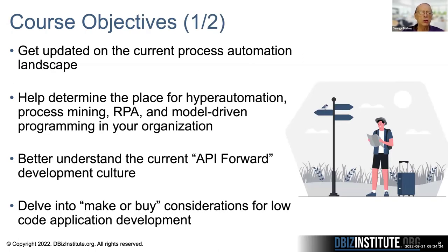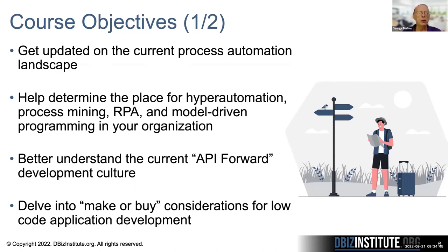This specific course has some specific objectives. First, we want to get you updated on the current process automation landscape. We want you to understand the place for hyper-automation, process mining, RPA, and model-driven programming in your organization. We also want to help you better understand the current API-forward development culture — the way we build programs is changing rapidly, and the concept is often referred to as API-forward. And we want to delve into make-or-buy considerations for low-code, no-code as part of your automation process.